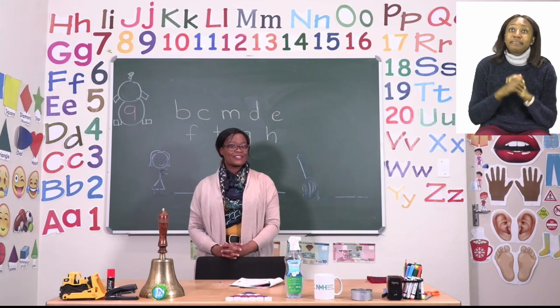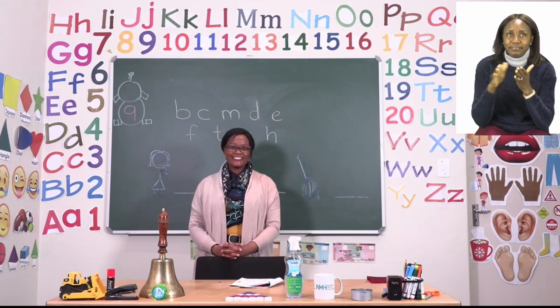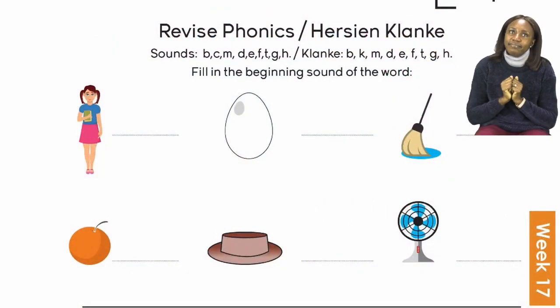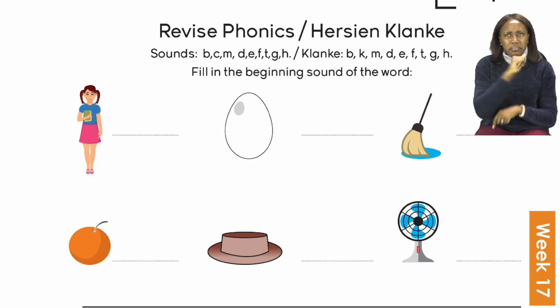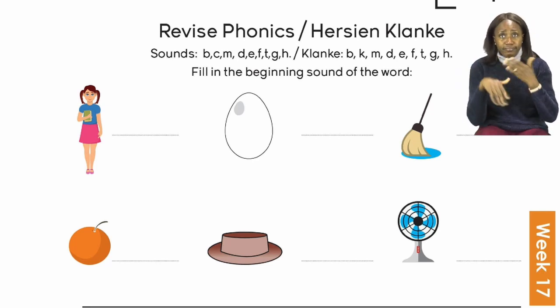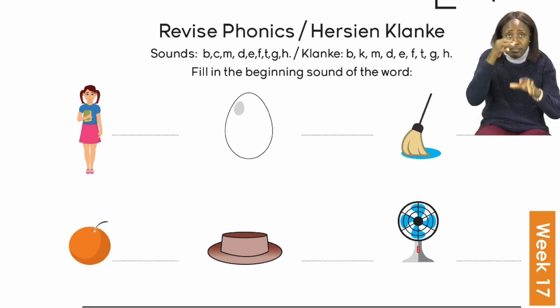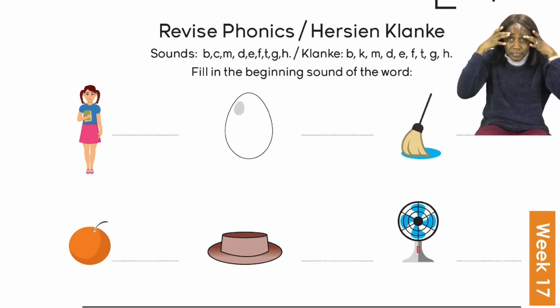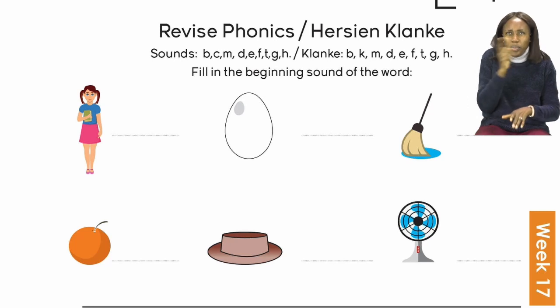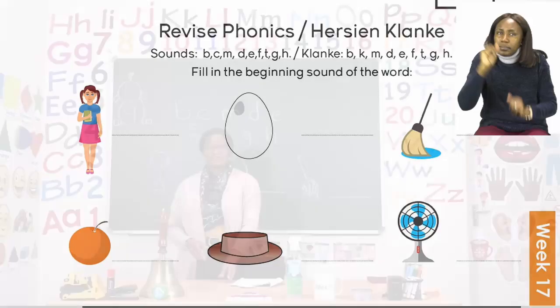For our next part we are going to now move on to page 9. On page 9 for our lesson today we are going to be revising our phonics. Now each of the pictures we can see has a beginning sound. That is the one that we have to fill in on the line. We can see that we have six pictures. We have a girl, egg, mop, orange, hat, fan. It's our job to choose the correct beginning sound from the ones we have been given. So let us take a look. We are going to do the first three together.